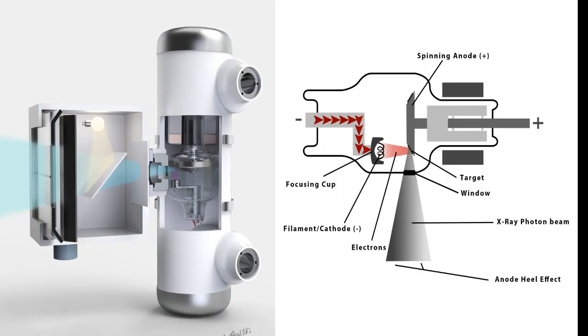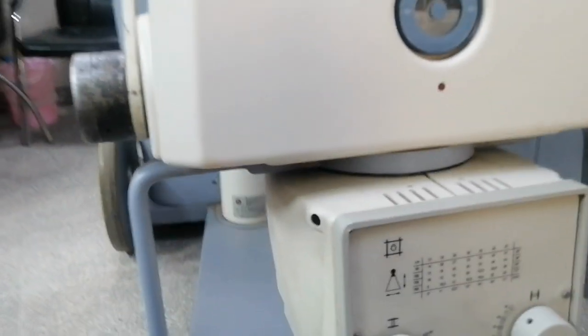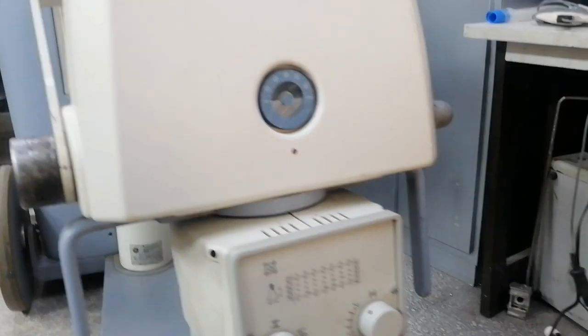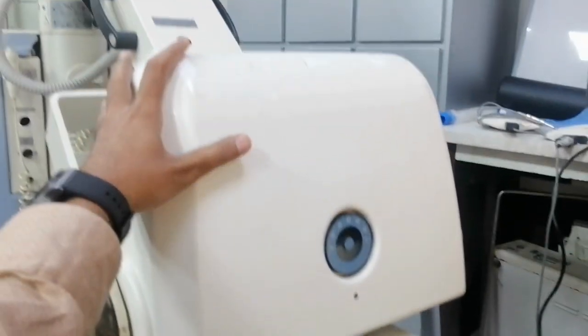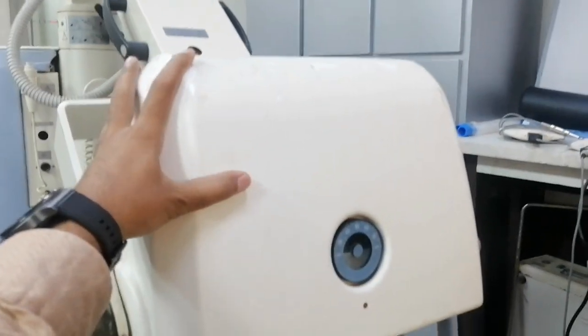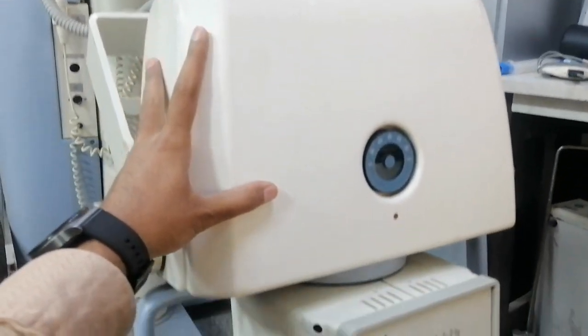The X-ray tube is the source of X-ray radiation. It is mounted on a flexible arm or a dedicated stand, allowing the healthcare professional to position it accurately for different imaging views.